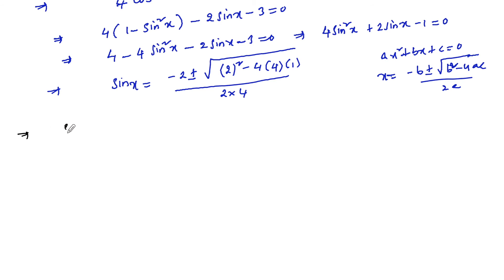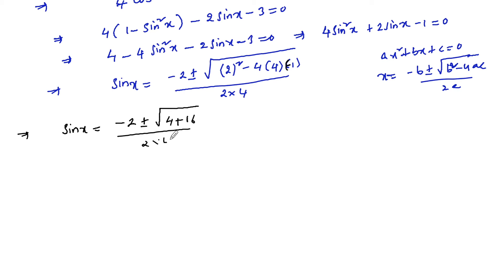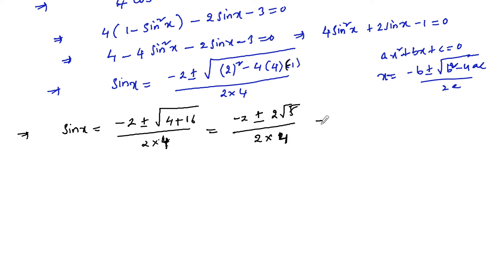Simplifying: sin x = (-2 ± √(4 + 16)) / 8 = (-2 ± √20) / 8. Now √20 = 2√5, so sin x = (-2 ± 2√5) / 8. Taking 2 common from the numerator: sin x = 2(-1 ± √5) / 8 = (-1 ± √5) / 4.